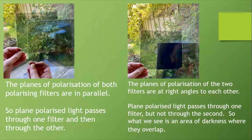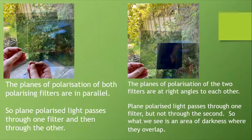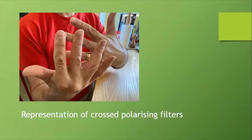Here I've got two polarizing filters. On the left the planes of polarization of both filters are in parallel. So the plane polarized light passes through one filter and then through the other and we can see what we can see. But on the right hand side, we're interested in the area of overlap. The planes of polarization of the two filters are at right angles to each other. So plane polarized light passes through one filter but not through the second. What we see is an area of darkness where the two filters overlap. And here in my simplified model is my representation of cross polarizing filters.